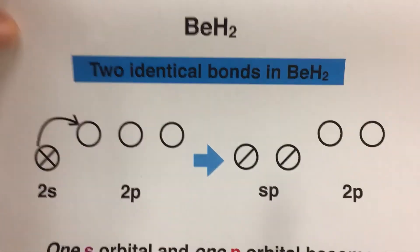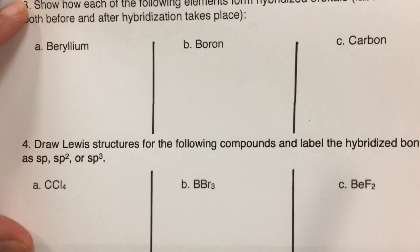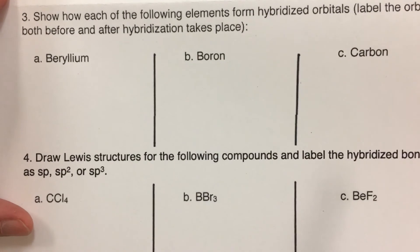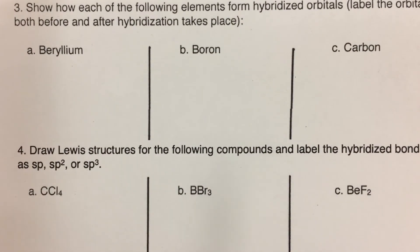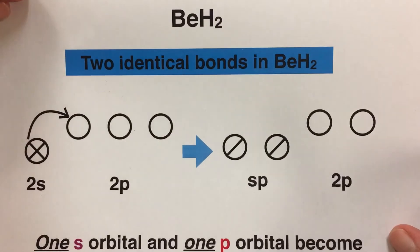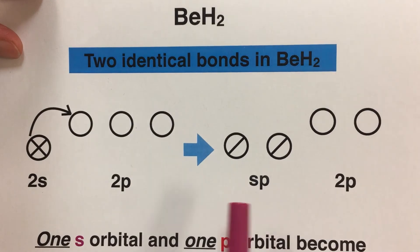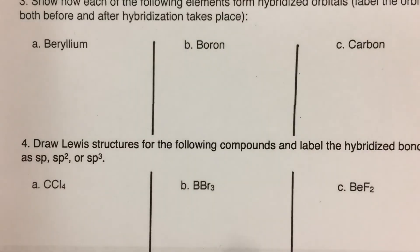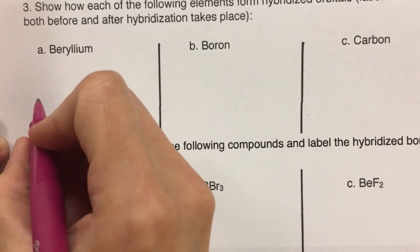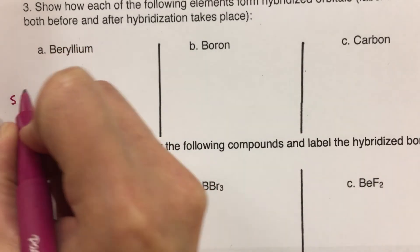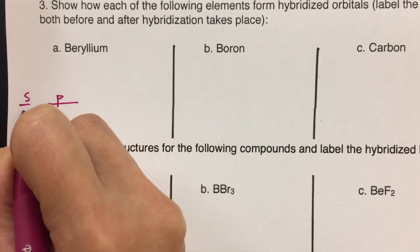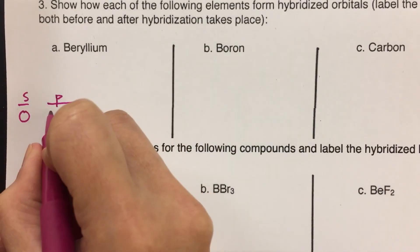To use this information to answer the questions, it's straightforward with your notes. Question three says to show how each element forms hybridized orbitals and to label the orbitals before and after hybridization. For part A, beryllium: you show the orbital diagrams directly from the notes. Before hybridization, beryllium has two valence electrons in the S orbital and empty P orbitals. I'll draw one S orbital and three P orbitals — beryllium is in group 2A, so it has two valence electrons placed in the S orbital.